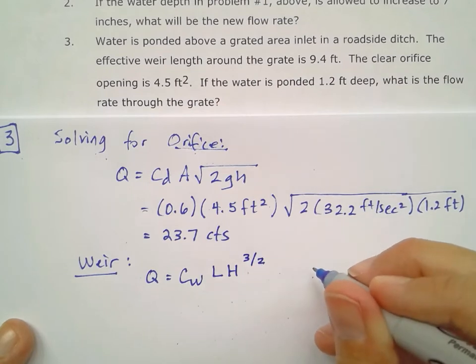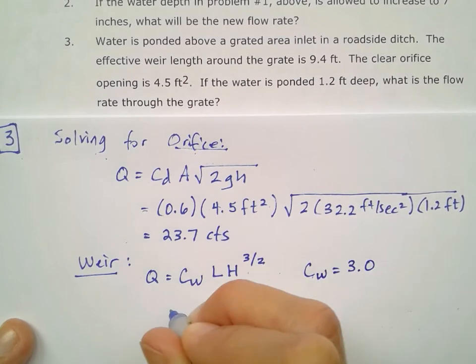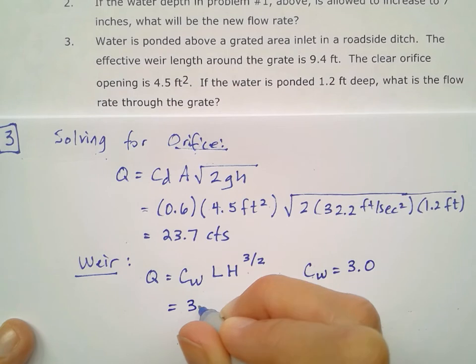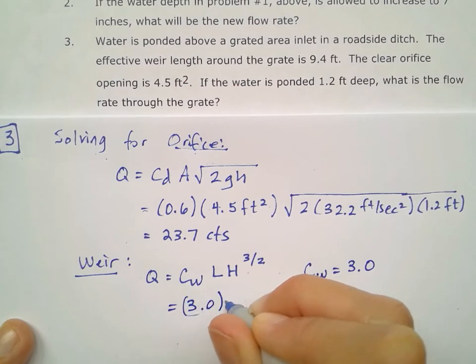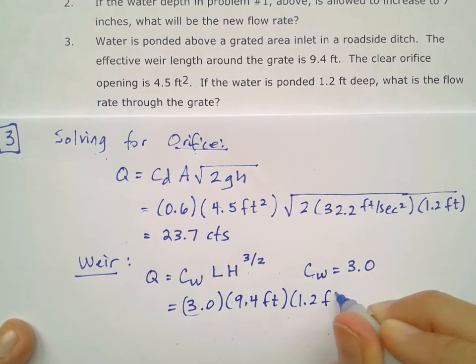So I'm going to assume this is a free fall weir roadside ditch. So my weir coefficient is going to be 3.0. So it's 3 times that length of the weir given to me 9.4 feet times that height of 1.2 feet raised to the 3 half power.